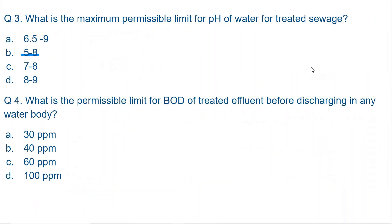Question three: What is the maximum permissible limit for pH of treated sewage? The options are 6.5 to 9, 5 to 8, 7 to 8, or 8 to 9. The correct option is 6.5 to 9. When treated sewage is discharged, the permissible pH limit is 6.5 to 9, according to the World Health Organization.